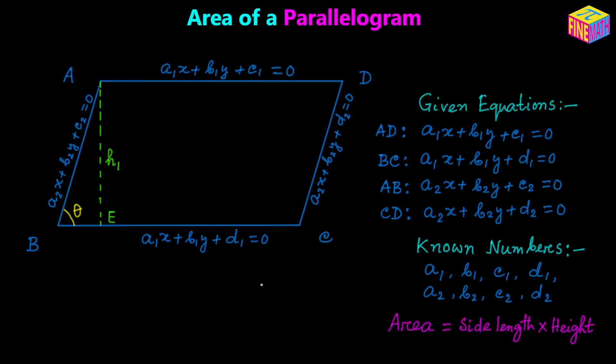So basically the known numbers are A₁, B₁, C₁, D₁, and similarly A₂, B₂, C₂, and D₂. Those will all be known numbers provided in the question. From geometry we know that the area of a parallelogram is equal to any of the sides multiplied by the height of the parallelogram based on that side.